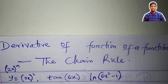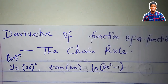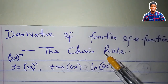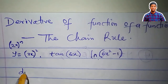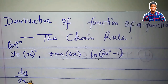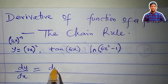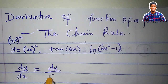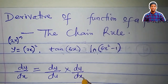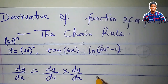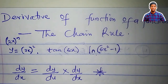To differentiate a function of a function, we apply the chain rule. What is the chain rule? dy/dx is equal to dy/du times du/dx. We call this the chain rule — take note.